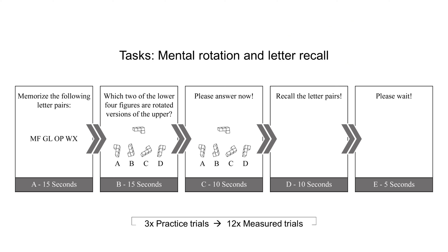The procedure was as follows: First, users had 15 seconds to memorize four letter pairs in the letter recall task. Then participants were displayed five three-dimensional objects in two rows for 15 seconds. In the first row, a query reference object was displayed, and four objects were depicted in the second row, two of which match the reference object. After that, participants had 10 seconds to answer their matches, then another 10 seconds to recall the letter pairs.